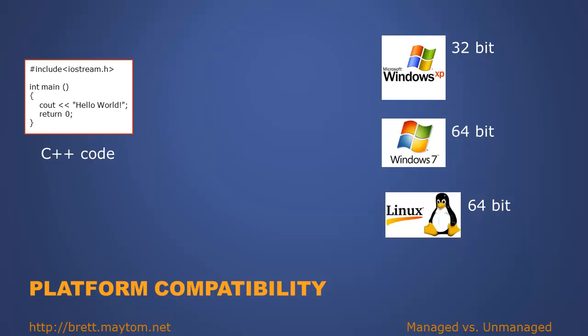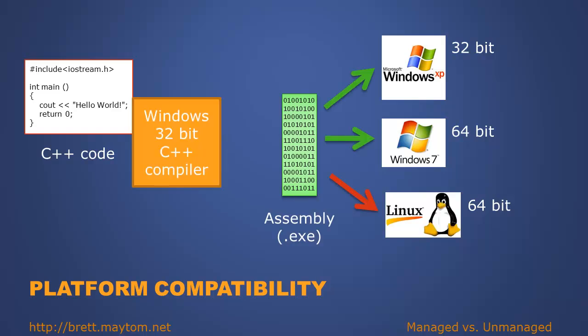How does this work? Let's say we've written some code in C++ to write out a message 'hello world' to screen. We'll then compile it using a Windows 32-bit compiler. It will create an assembly, an .exe file. Being a 32-bit application for Windows, it will run on Windows XP 32-bit and Windows 7 64-bit. However, it is not compatible with Linux at all and will not run.